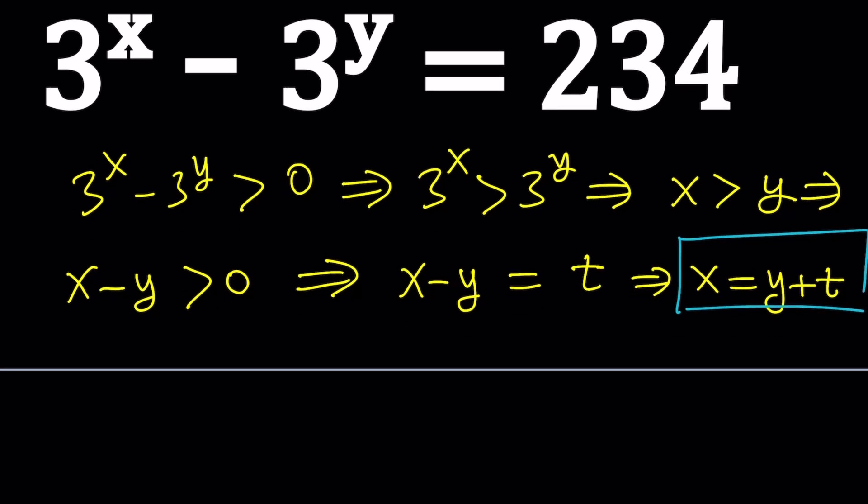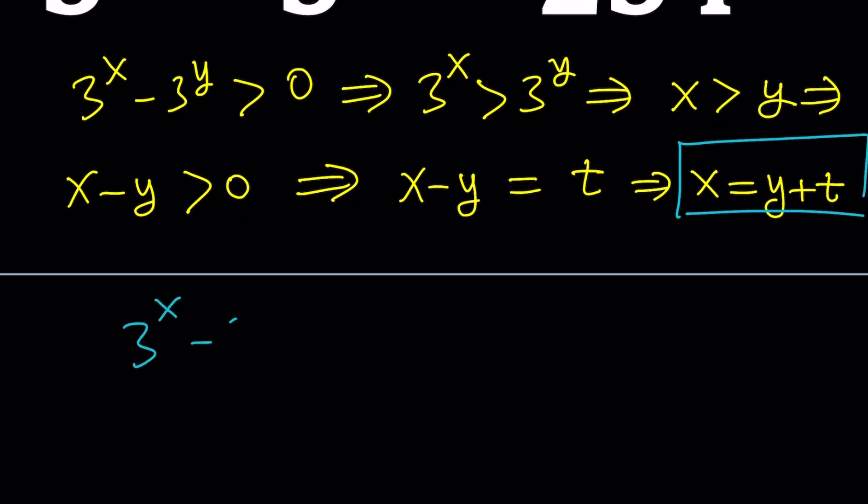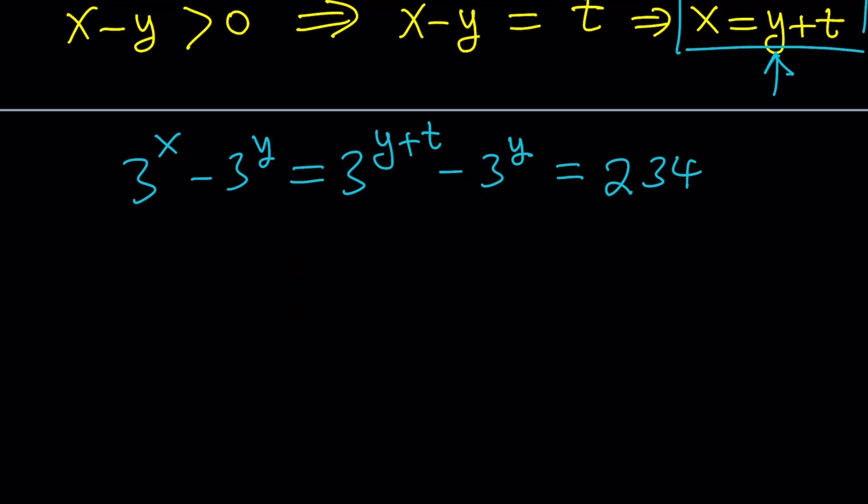Notice that the original problem has 3 to the x minus 3 to the y. Now, I can go ahead and replace x with y plus t. So, that's going to give me 3 to the y plus t minus 3 to the y. And that is equal to 234. Now, notice that you can clearly see x is greater than y because you're adding a positive number to y to get x.